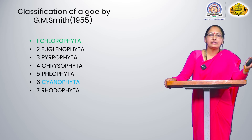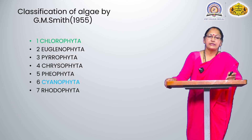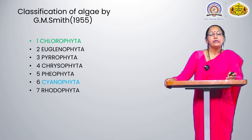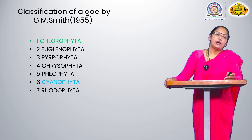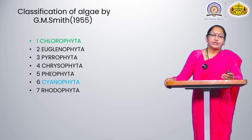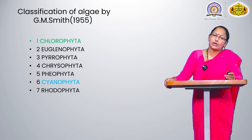All points are revised. In today's lecture, we see the classification of algae by G.M. Smith in 1955. The first class is Chlorophyta, then Euglenophyta, Pyrrophyta, Chrysophyta, Phaeophyta, Cyanophyta, and Rhodophyta. These seven classes are derived on the basis of reserve food material and chlorophyll pigments. Today we focus on Chlorophyta and Cyanophyta only.